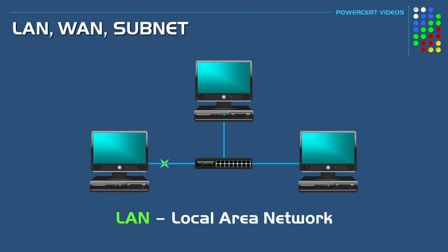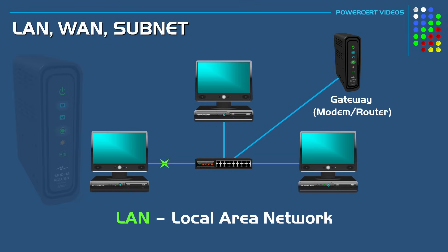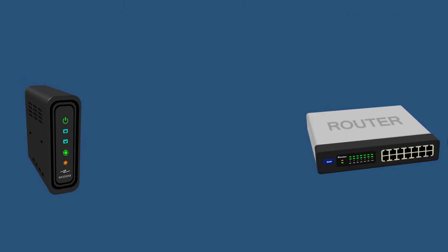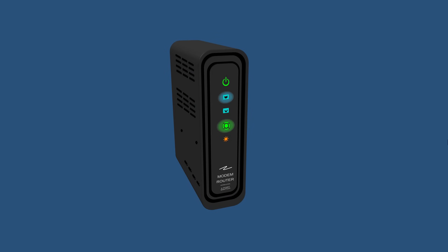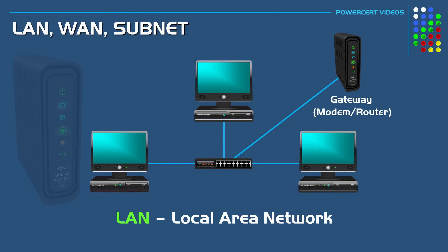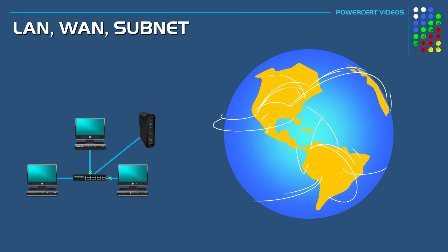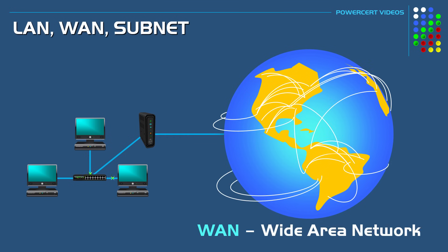However, if these computers need to access another network, such as the internet, they would need to contact an internet service provider and then that ISP would send them a device called a gateway. Now a gateway is a modem router combo. Once the gateway is connected, the computers in this local area network can now access and be a part of a wide area network or WAN.